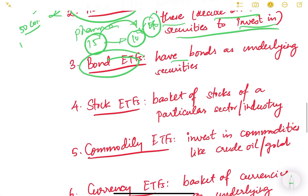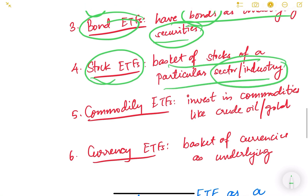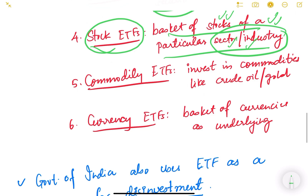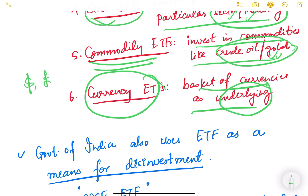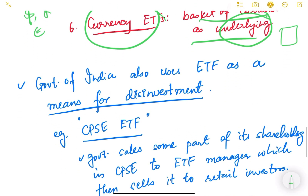The next type is bond ETFs, where bonds are the underlying securities instead of shares. Then there are stock ETFs — a basket of stocks from a particular sector or industry, tracking that sector such as pharma, health, or real estate. Commodity ETFs invest in commodities like crude oil or gold. Currency ETFs have a basket of currencies as the underlying — for example, the dollar, pound, or euro — because people speculate that currency values will fluctuate and make money through the currency market.